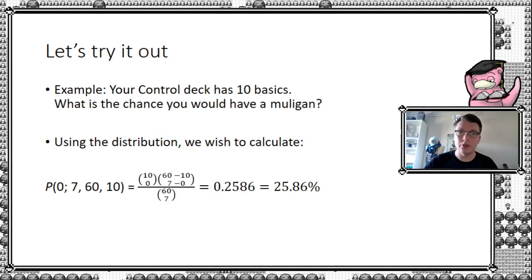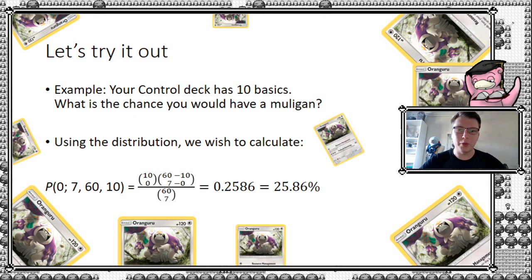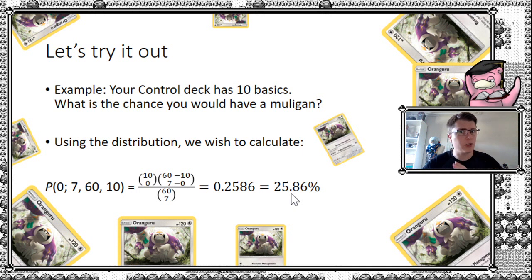Now let's apply it. Suppose I have a control deck with 10 basics — what is the chance of having a mulligan? To calculate this, we set x = 0, meaning we want zero basics in the opening hand. With 7 cards drawn, a 60-card deck, and 10 basics, inserting all numbers yields approximately 25.86%. So in a deck with 10 basics, you have a 25.86% chance of hitting a mulligan. That is the simplest application of this hypergeometric distribution.